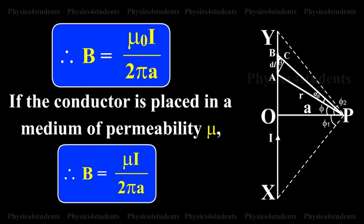If the conductor is placed in a medium of permeability μ, B equals μ0 times I by 2πA.